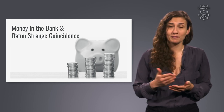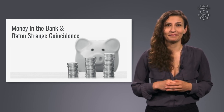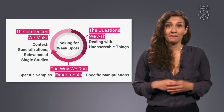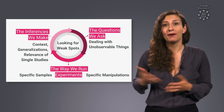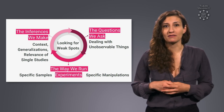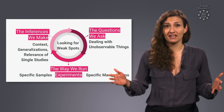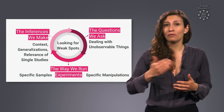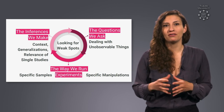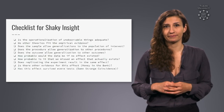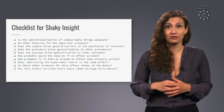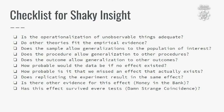This means we have now identified some other potential weak spots about experiments: interpretations that don't take into account the theoretical context, that overgeneralize, or that value individual studies too much. To make it easier to spot shaky insights, here is a checklist containing all 10 issues we have spoken about in this part of the course. Let me show you how to use the checklist in an example.